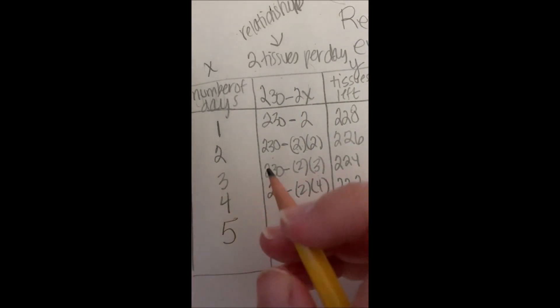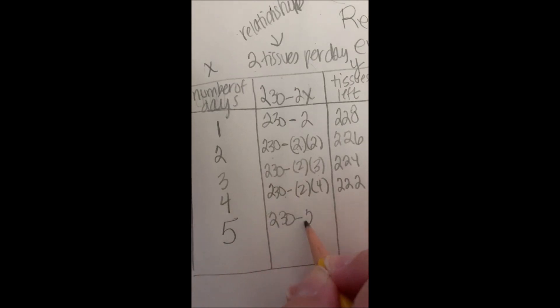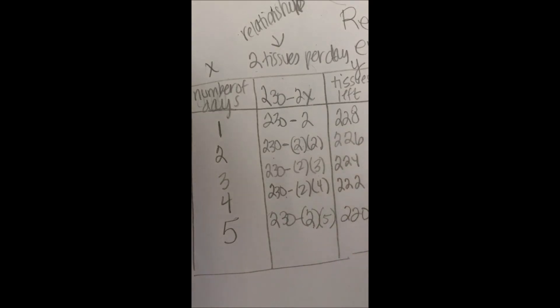Five days. 230 minus two tissues per day. Five days. So it's 230 minus 10. 220 tissues left.